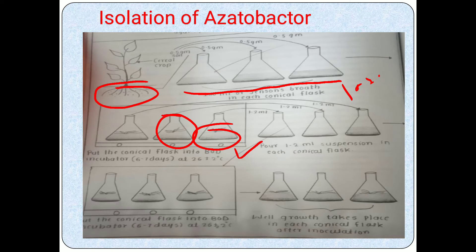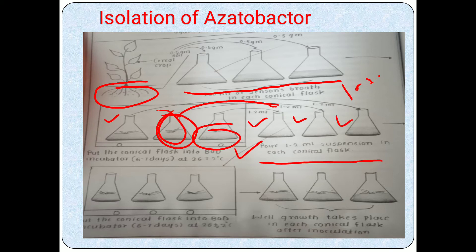For mass multiplication, take another three to four conical flasks each containing 100 ml of Jensen broth. Transfer the growth of Azotobacter from the previous flask — transfer one to two ml of Azotobacter broth — into each of the new conical flasks.